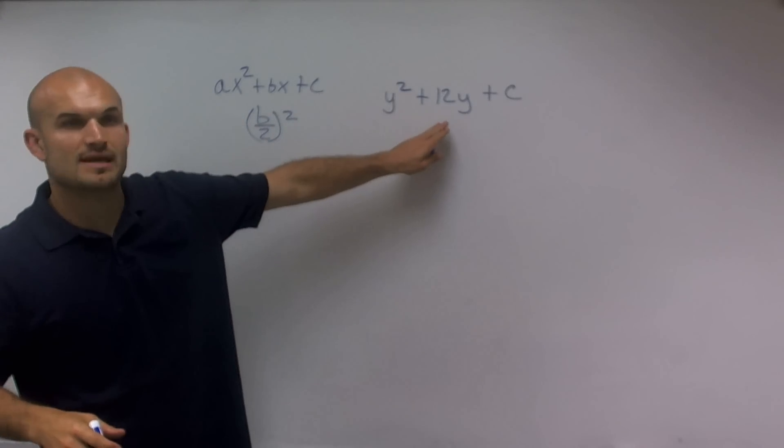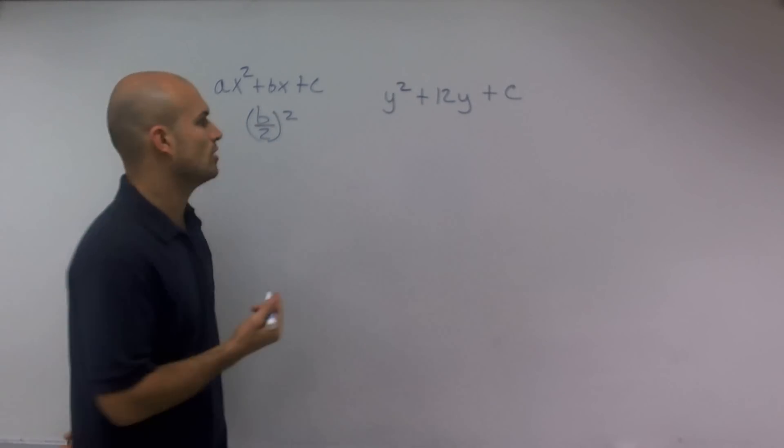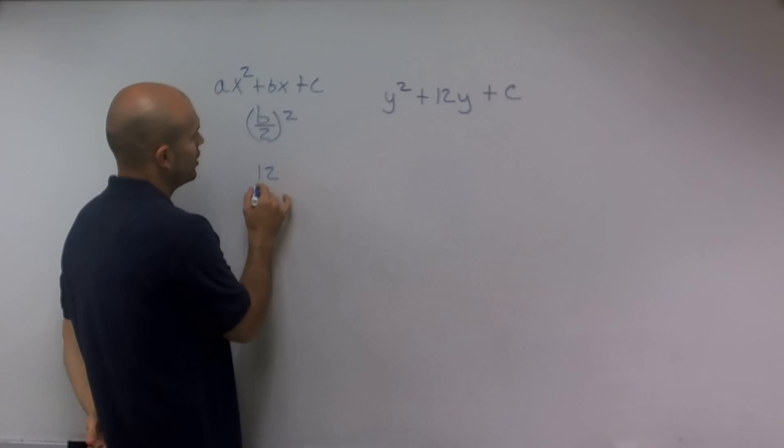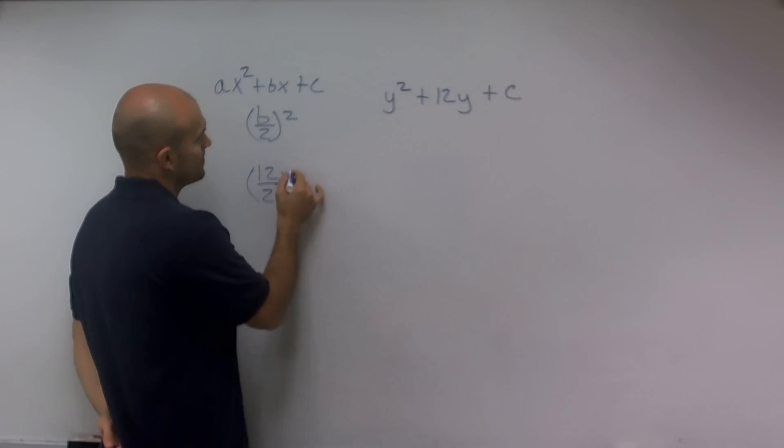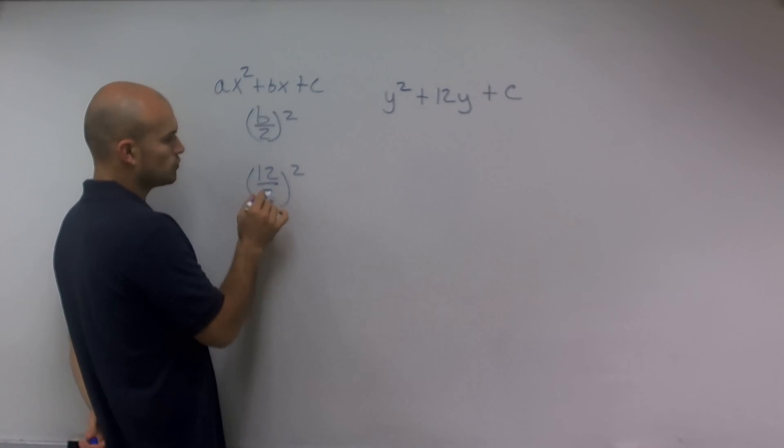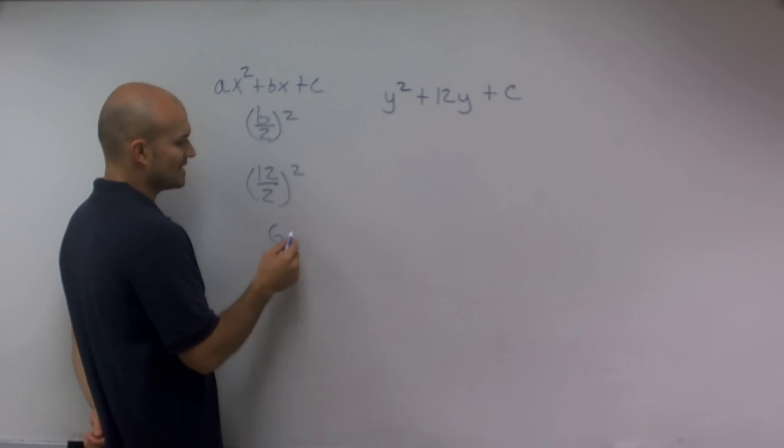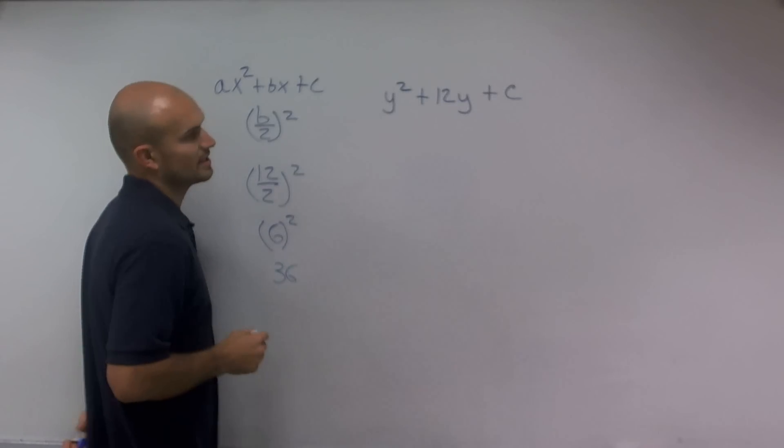So in this form, you could say my b is going to be 12. So what I'm going to do is take 12 divided by 2 and square it. Well, 12 divided by 2 is going to give me 6, and 6 squared is going to leave me with 36.